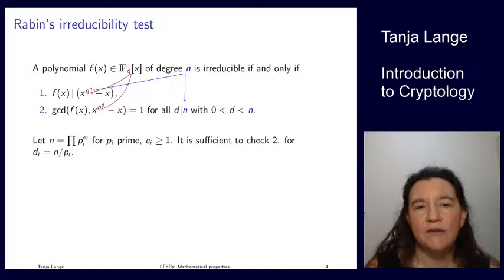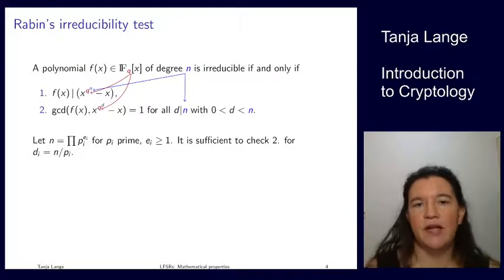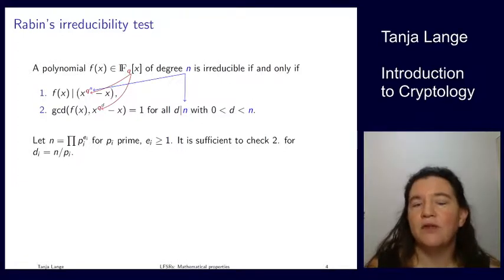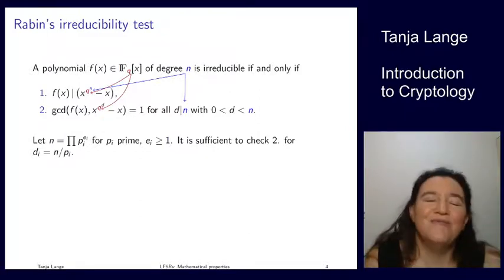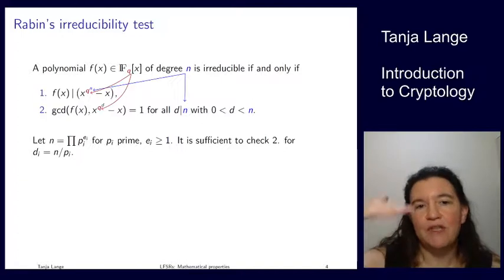And then also for every divisor of n, and we only care about interesting divisors, so we don't care about d equals to n, but we do care about 1, for instance. We do check that the GCD of F with x to the q and now to the d instead of to the n minus x is 1. So for d equals n, the GCD is F, because F is a divisor. And for all the other ones, it must not be divisor or any factor of F must not be divisor. Well, if F is irreducible, there are no non-trivial factors, and so there shouldn't be anything else. And so if you have these two properties satisfied, then your polynomial F is irreducible.